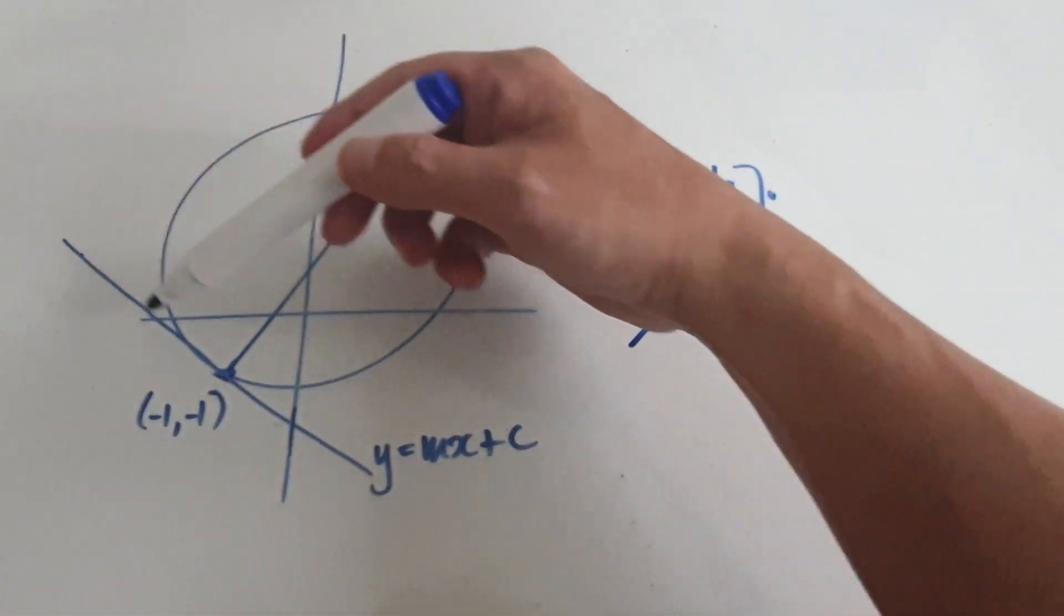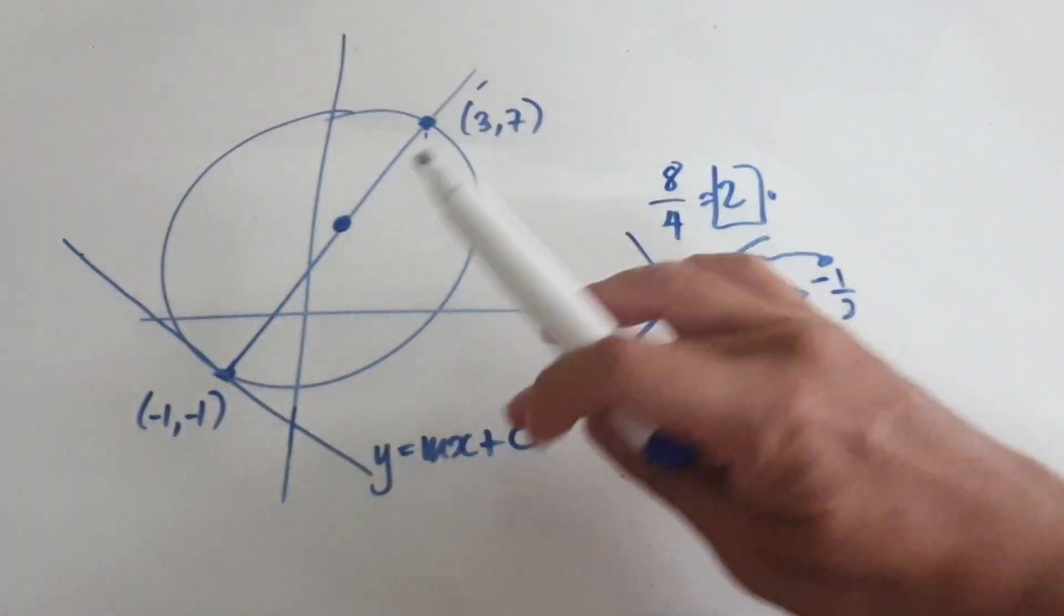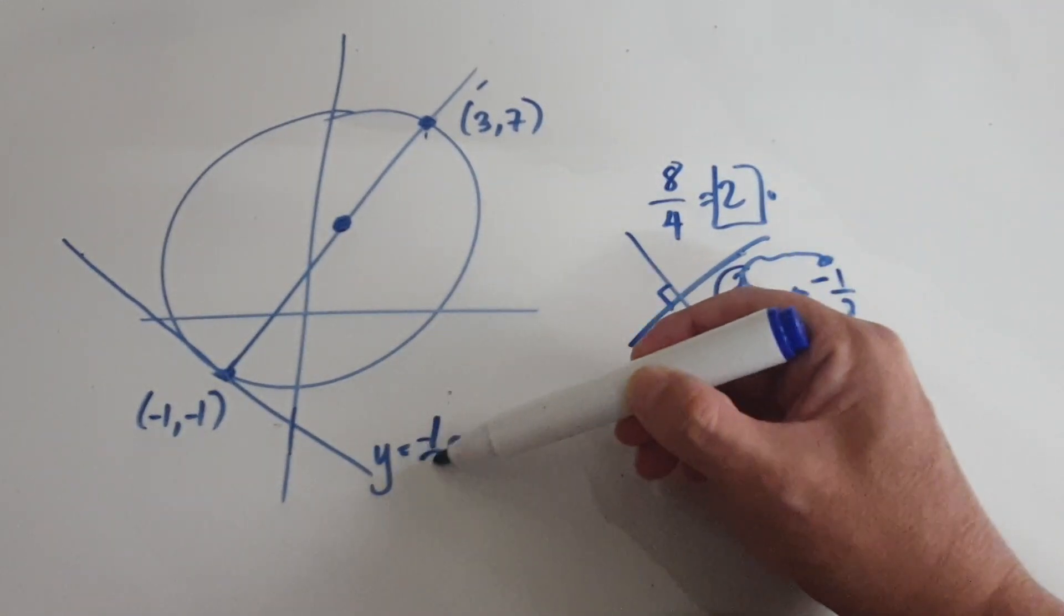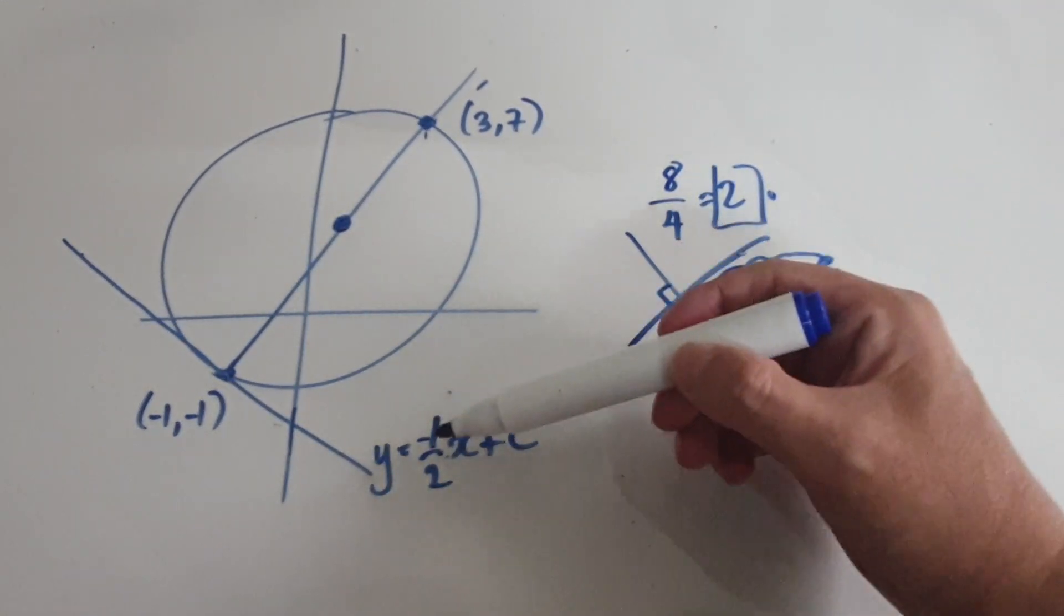So we now know that the gradient of this straight line would be negative 1/2. Negative 1/2. So now we know the gradient.